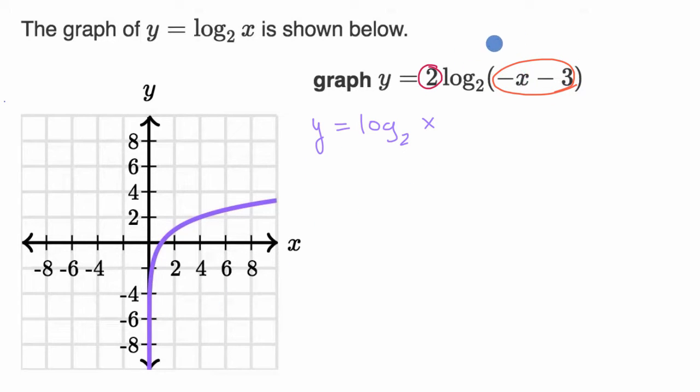And in fact, we could even view that as the negative of x plus three. So what we could do is try to keep changing this equation, and that's going to transform its graph until we get to our goal. So maybe the first thing we might want to do is, let's replace our x with a negative x. So let's try to graph y equals log base two of negative x.